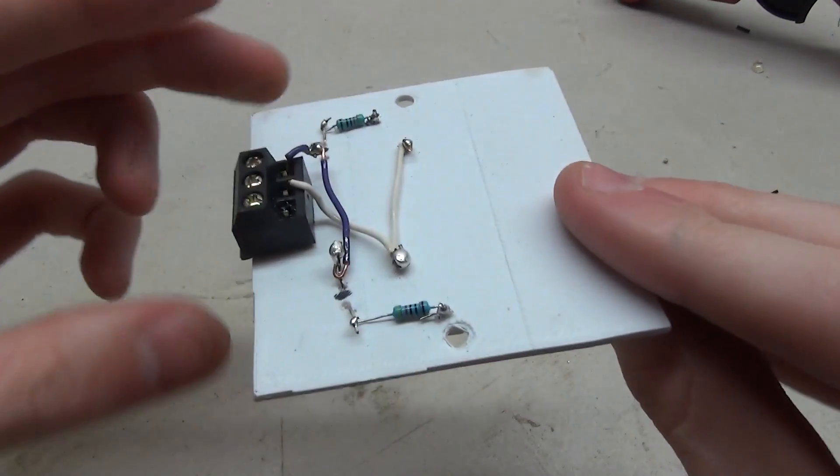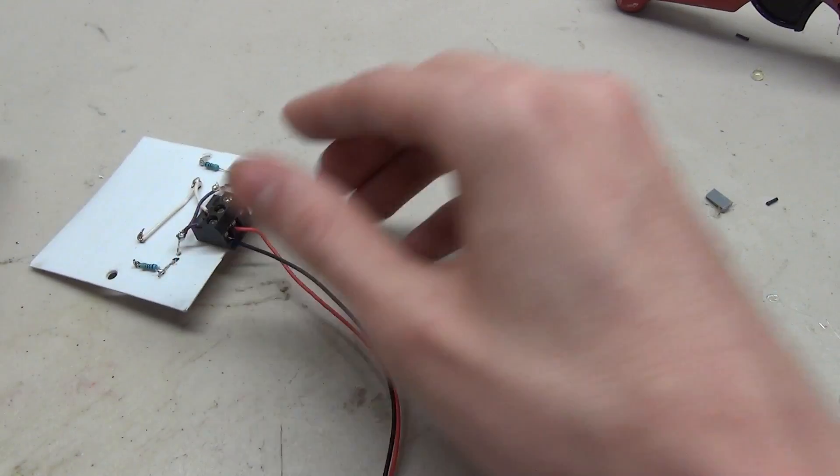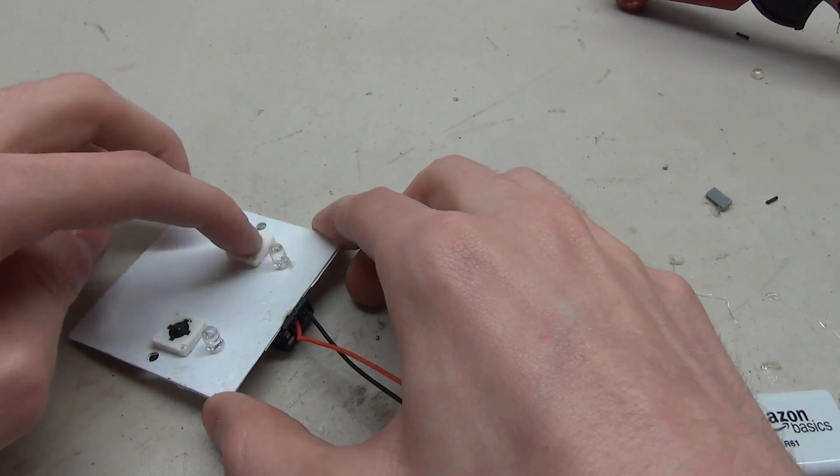Here we have the completed board which I think came out pretty nice. You can see we have the two buttons and the two lights. Now the next thing to do is plug in a battery and test it, and it works.